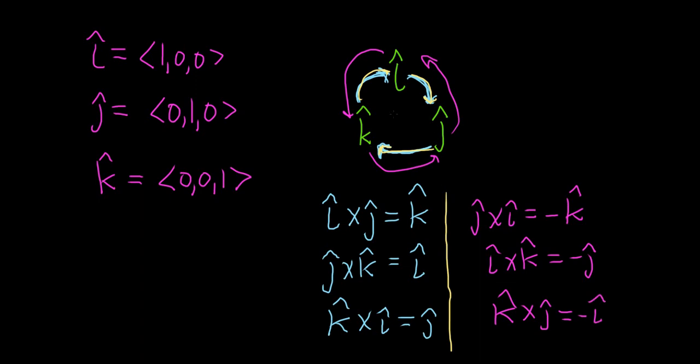So if you follow the arrows, you write the answer down. If you go backwards, you put a negative. I hope this video has been helpful.